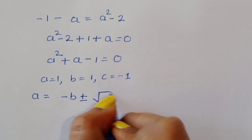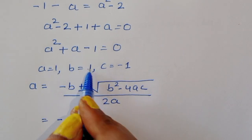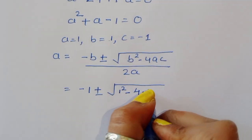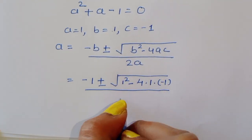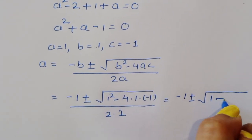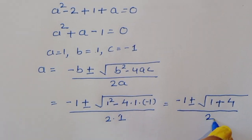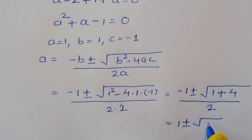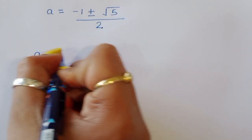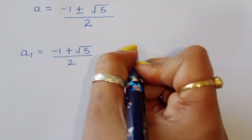Using the quadratic formula: a = (-b ± √(b^2 - 4ac)) / (2a) = (-1 ± √(1 - 4·1·(-1))) / 2 = (-1 ± √(1 + 4)) / 2 = (-1 ± √5) / 2.